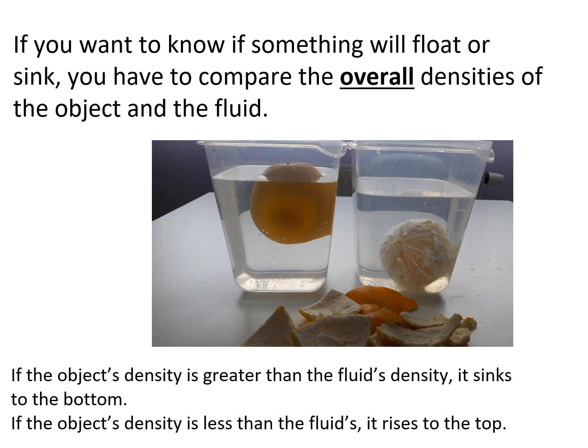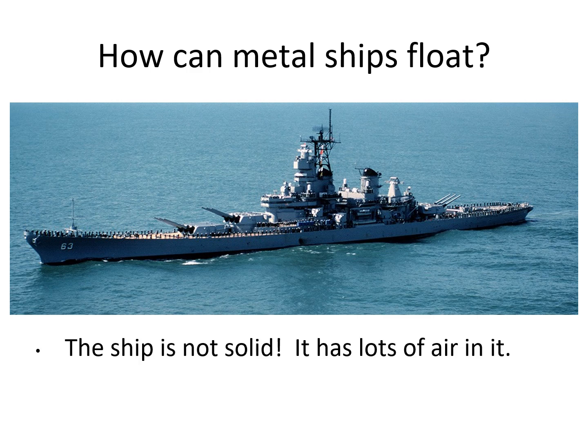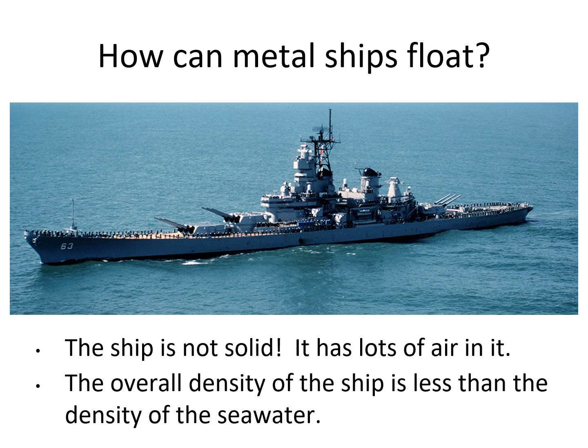If you want to know if something will float or sink, you have to compare the overall density of the object and the fluid. Here we have two oranges — one with the peel, one without. The one with the peel floats; the one without sinks. That peel has a lot of air incorporated into it, which gives it an overall density lower than water. A metal ship floats because it's not solid — it has lots of air inside. If you take the entire mass of the ship divided by the entire volume, you get a ratio of less than 1 gram per cubic centimeter. In other words, its density is less than water.